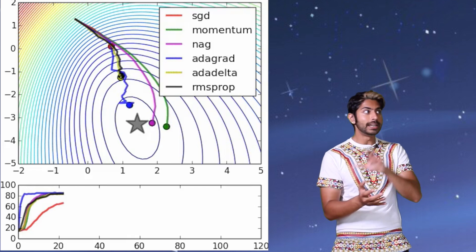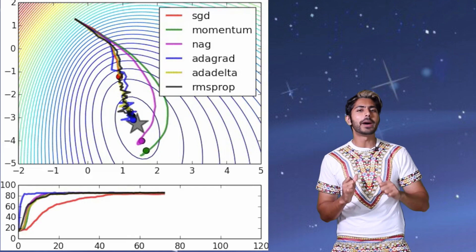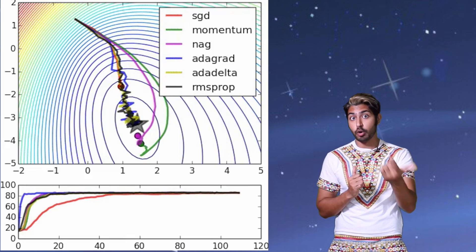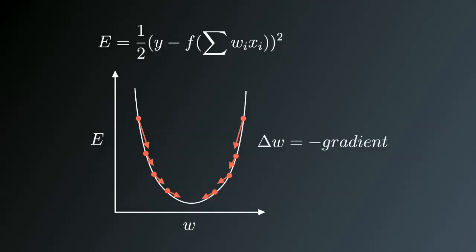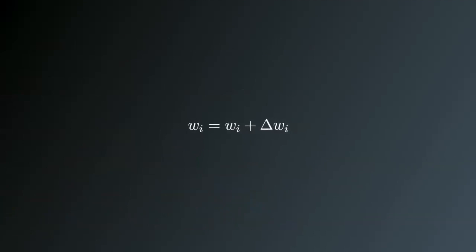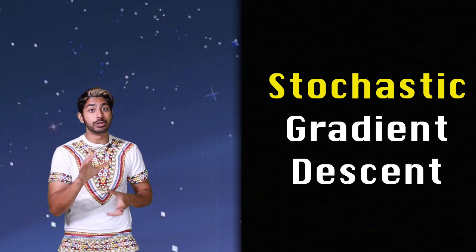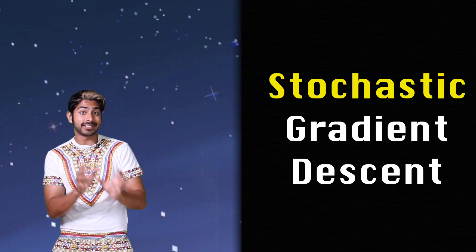So to decide which of the gradient descent optimization techniques we should use in our model, let's learn about the various discoveries around gradient descent over the years. Traditional gradient descent computes the gradients of the loss function with regards to the parameters for the entire training data set for a given number of epochs. Since we need to calculate the gradients of the whole data set for just a single update, this is relatively slow and even intractable for data sets that don't fit in memory. So to get around this intractability, we can use stochastic gradient descent.